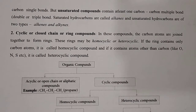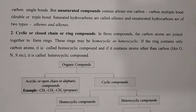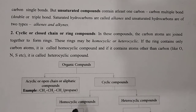The second major category is cyclic or closed chain or ring structures. In these compounds, carbon atoms are joined together to form rings. These rings may be homocyclic or heterocyclic. If the ring contains only carbon atoms, it is called a homocyclic compound. If it contains atoms other than carbon — like oxygen, nitrogen, or sulfur — it is called a heterocyclic compound.